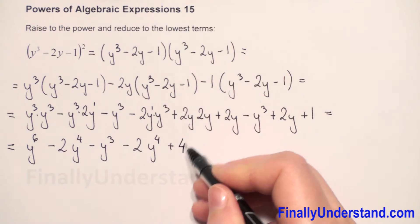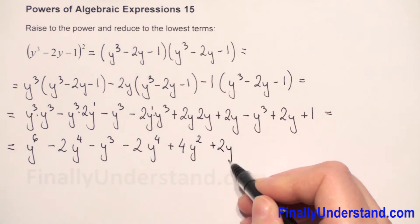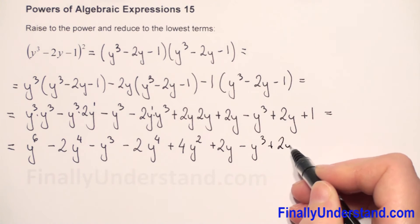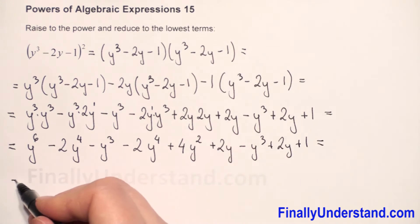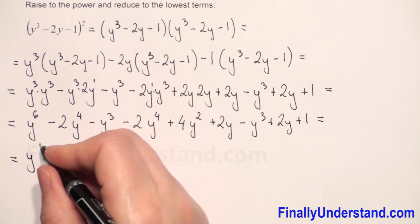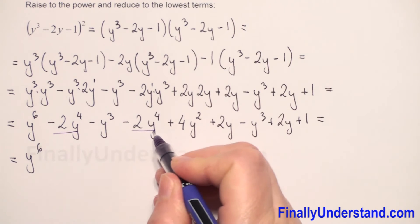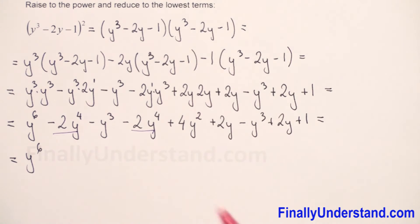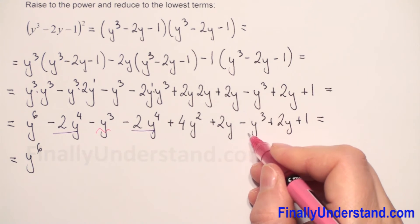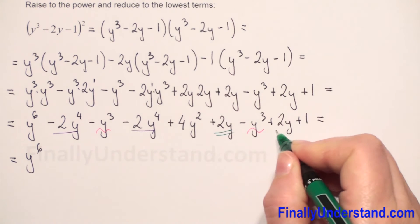Then 2 times 2 is 4, y times y is y², plus 2y, minus y³, plus 2y, plus 1. Now we combine like terms. We have first y⁶ — only one term. Next, negative 2y⁴ and negative 2y⁴. Then y³ and y³ terms, and 2y and 2y terms.